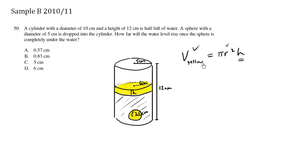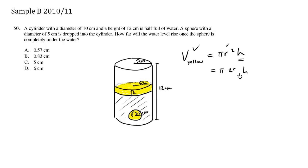R is 5, so the volume of the yellow cylinder equals pi times 5 squared times H. What is 5 squared? It's 25. So the volume of the yellow cylinder equals 25 pi H. Now let's solve for the volume of the yellow portion.